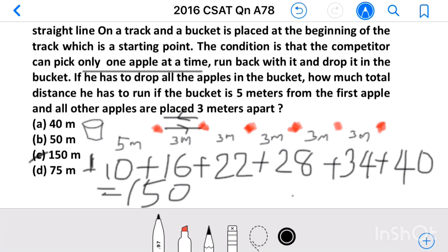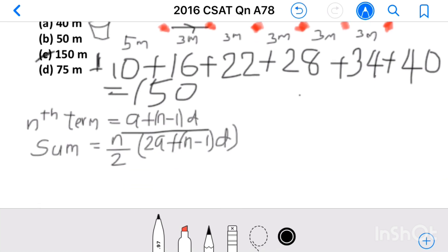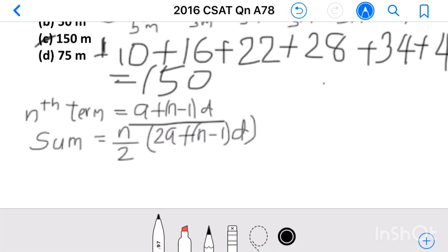This is a progression with first term equal to 10 and the difference is it is progressing by 6. Using equation of progression, we can solve this question. To find the sum of progression, the equation is n by 2 into 2a plus n minus 1 into d.